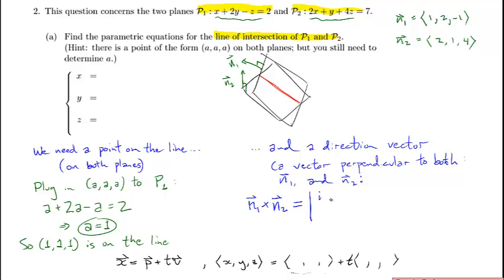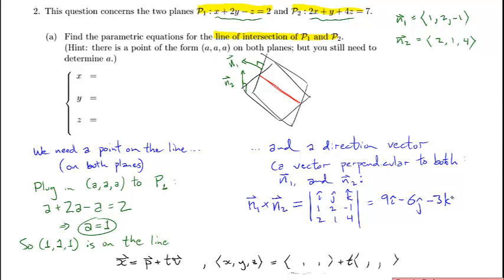You get a vector perpendicular to two given vectors by taking the cross product. Computing the cross product of N1 and N2, you get 9i minus 6j minus 3k, or in angle bracket notation, ⟨9, −6, −3⟩. That is the direction of the line.